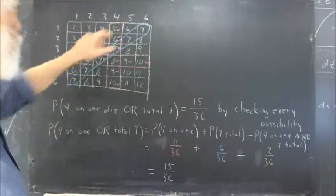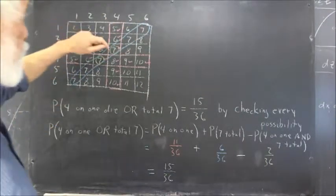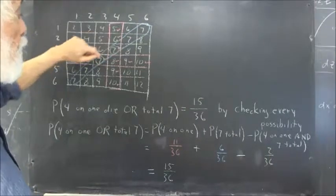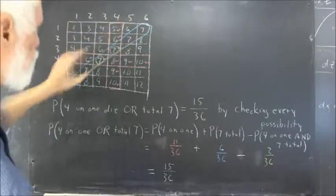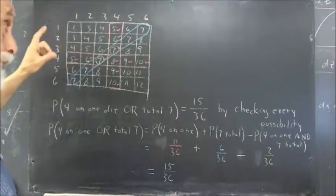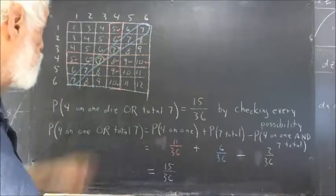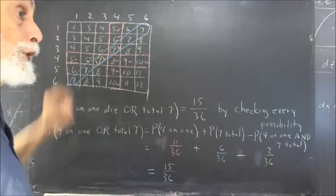We see that the 4s occur in this column and this row. Now, 7s occur on this diagonal. And there are two places where we have both, where the two sets intersect. Think of the red outline set as being one set. Think of this as being another. So, we have kind of two Venn diagrams. And the intersection contains two outcomes.